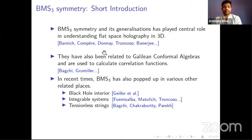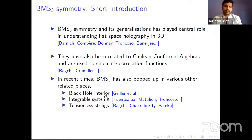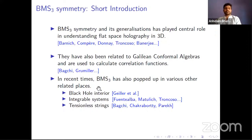This algebra and its generalizations have played a central role in understanding flat space holography in 3d. A lot of work was devoted to writing 2d duals of this bulk gravity theory using BMS3 symmetry. BMS3 has also been related to Galilean conformal algebras, used to calculate correlation functions, and has popped up in various other related places — for instance in the effective dynamics of black hole interiors, in integrable systems, and even in the bosonic sector of tensionless strings.